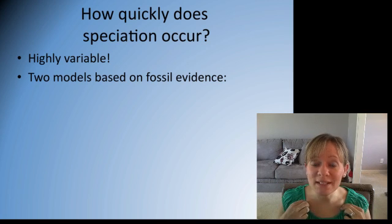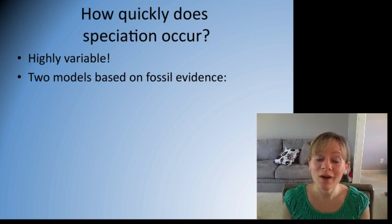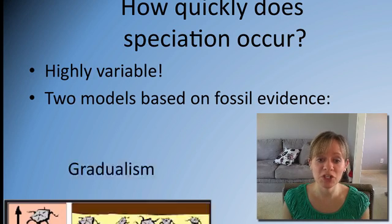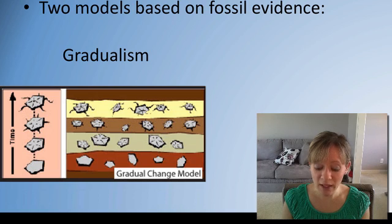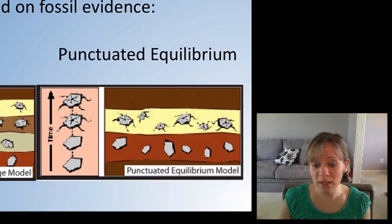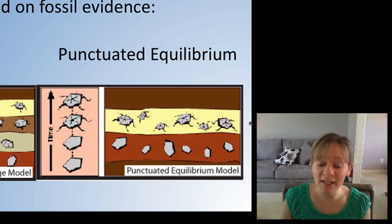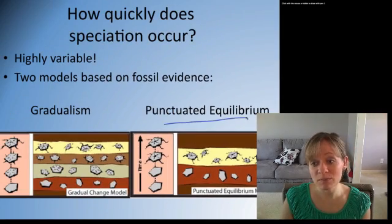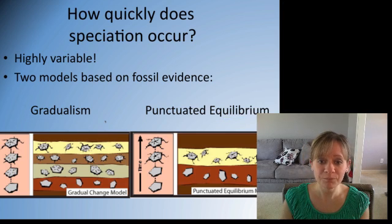How quickly does speciation happen? It's highly variable, and scientists have concluded there are two models. Gradualism: the fossil record shows a gradual, step-by-step change through different strata. Punctuated equilibrium: in one stratum we have one fossil, and in the very next stratum it is an entirely different species — it happened very quickly. Some fossils support gradualism, and others support punctuated equilibrium.